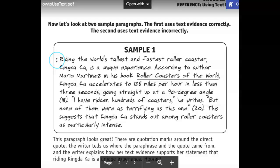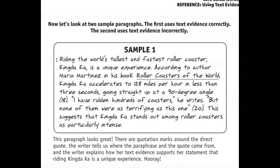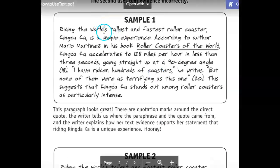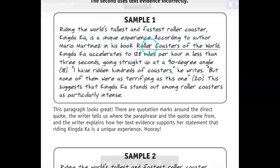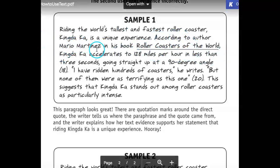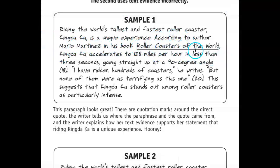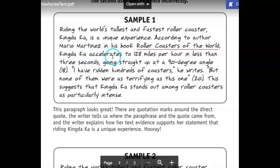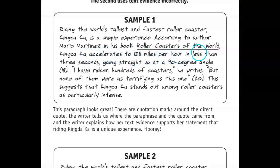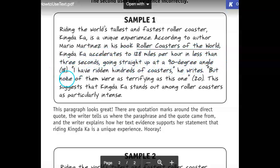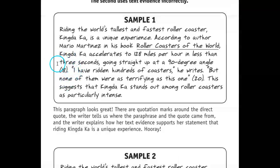Follow along with me please. 'Riding the world's tallest and fastest roller coaster, King Dakar, is a unique experience.' We've got a claim statement. 'According to author Mario Martinez in his book Roller Coasters of the World, King Dakar accelerates to 128 miles per hour in less than three seconds, going straight up at a 90-degree angle' — page 18 of his book.